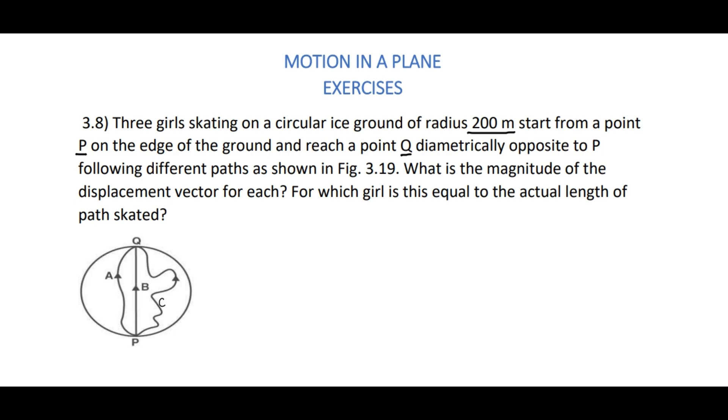Following different paths as shown in the figure, what is the magnitude of the displacement vector for each? For which girl is this equal to the actual length of the path skated? Here we have two sub-questions: one is the magnitude of the displacement vector for each we need to calculate, and for which girl is this equal to the actual length of the path skated.